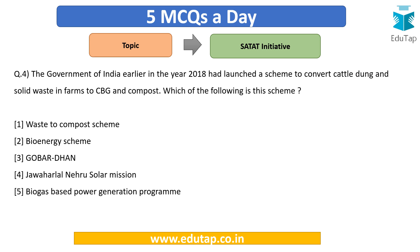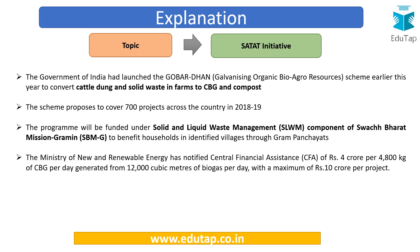Question number four: The Government of India earlier in 2018 had launched a scheme to convert cattle dung and solid waste in farms to CBG and compost. Which of the following is this scheme? Options are: Waste to Compost Bioenergy, GOBARDHAN Yojana, Jawaharlal Nehru Solar Mission, or Biogas Based Power Generation Program? The answer is GOBARDHAN Yojana — Galvanizing Organic Bio-Agro Resources — which proposes to cover 700 projects across the country.